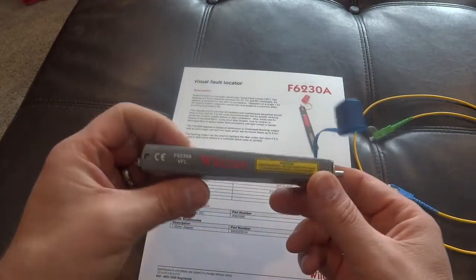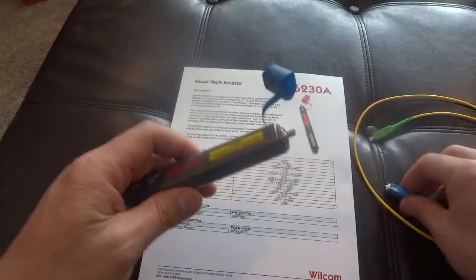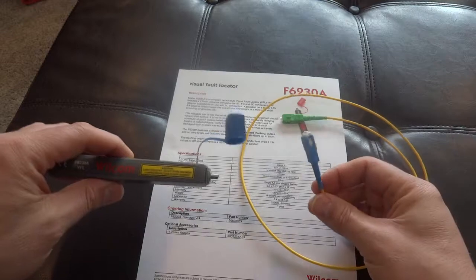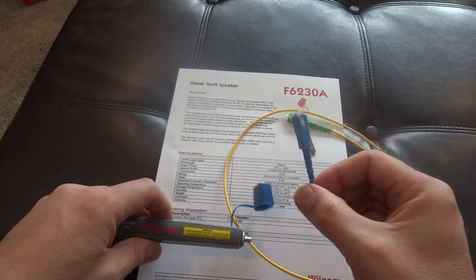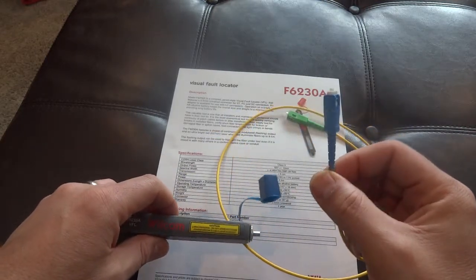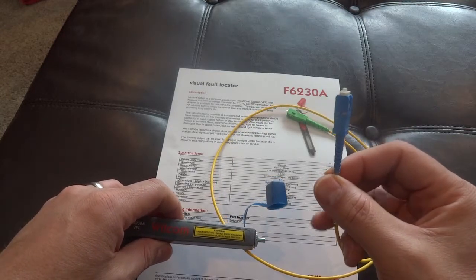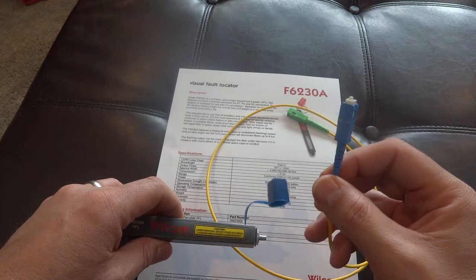Now I'm going to show you how to use it. I've got a simple patch cable here. This has got a blue end on it, which is typical. This is an SC connector, and the blue typically identifies that it is a UPC.